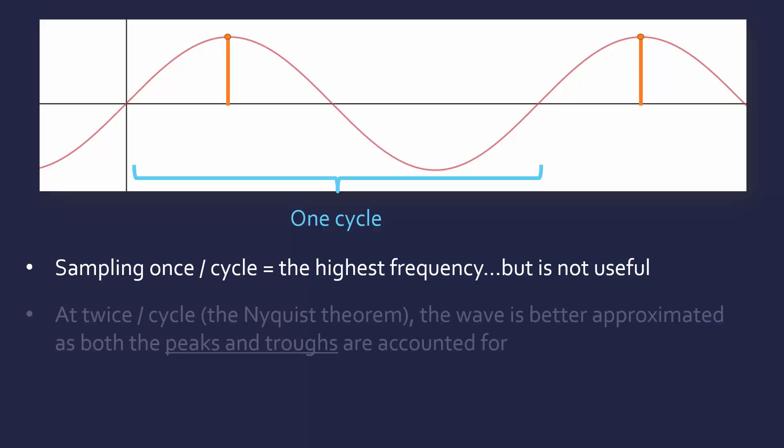So if we're doing the minimum suggestion of the Nyquist theorem and doing two samples per cycle, we are doing a better job at approximating our wave because we can do it on both the peak and the trough of our wave. We're able to do the trough as well because I'm doing it twice in one cycle.